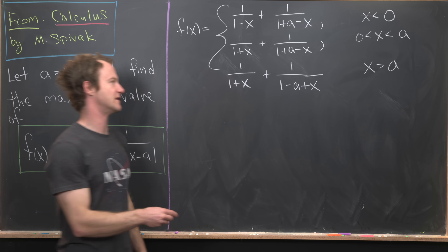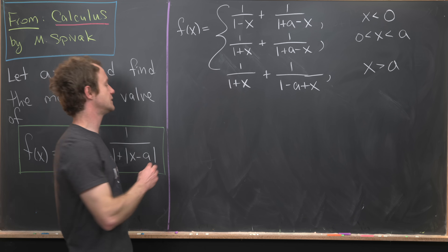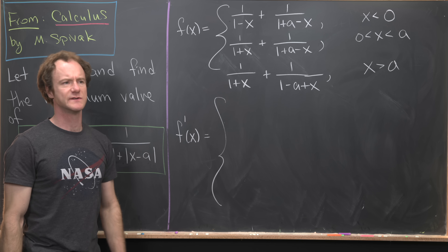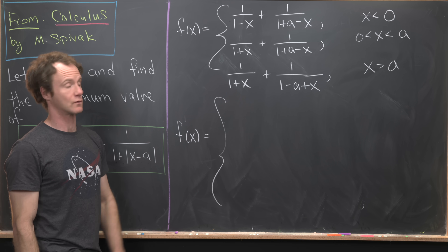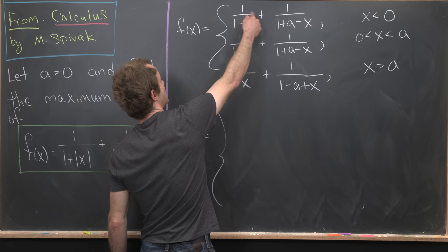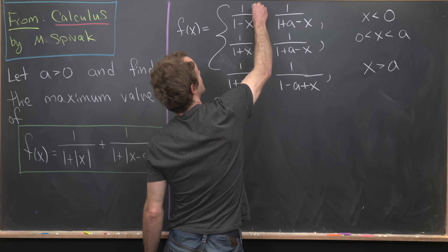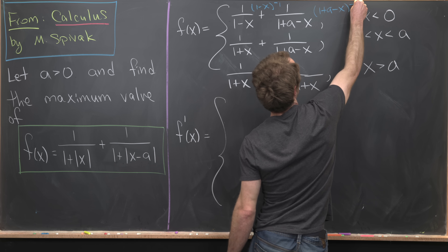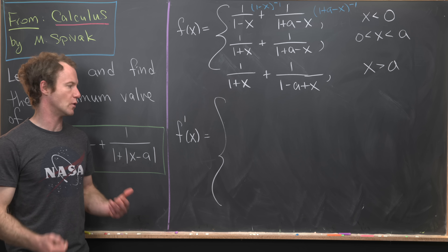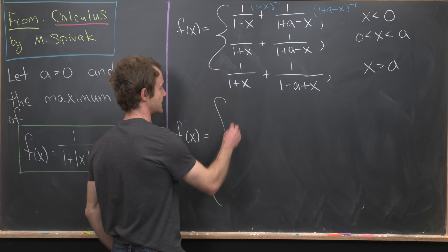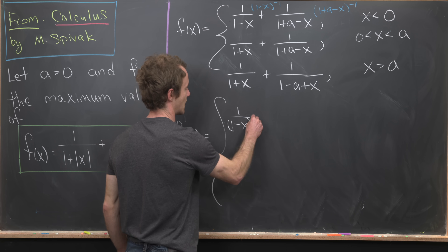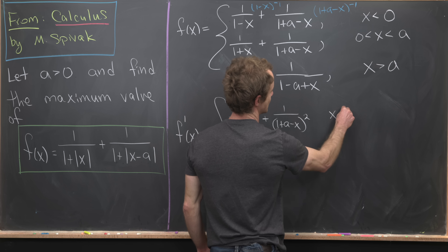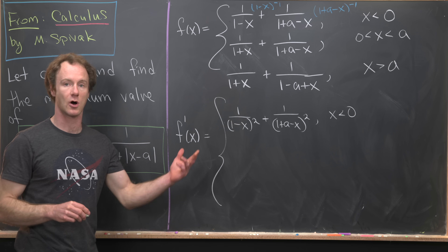We can now take the derivative on each of these intervals using standard derivative rules — either the quotient rule or the chain rule combined with the power rule, thinking of the terms as (1 − x)^(−1) and (1 + a − x)^(−1). The derivative for the x < 0 piece is 1/(1 − x)² + 1/(1 + a − x)².